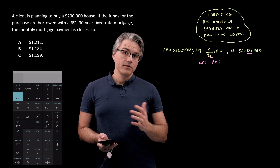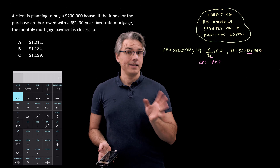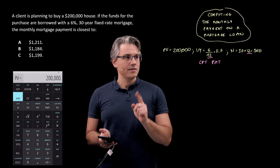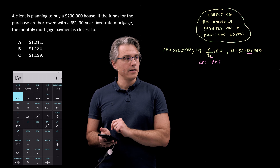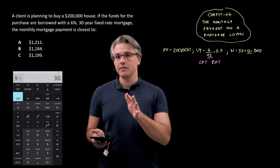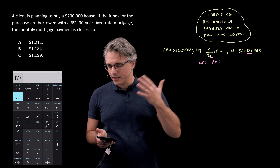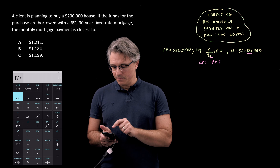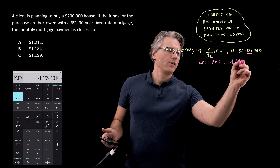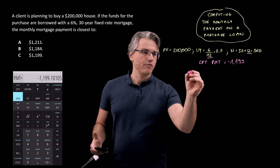Over to the calculator. Because this is a TVM worksheet problem, I'm going to clear the worksheet first — second followed by FV. Now let's enter the inputs: 200,000 as PV; 0.5 as I/Y; 360 as N. I don't need to enter FV as 0 because by default it is, assuming we've cleared the calculator — but it doesn't hurt to press 0 FV in the exam for assurance. Now let's compute PMT. The answer that comes out is minus 1,199. That's negative because it signifies an outflow of money, but it does correspond with answer C.